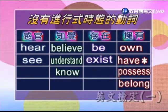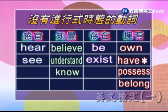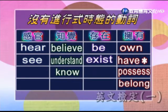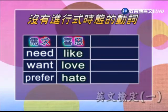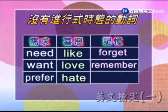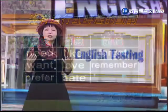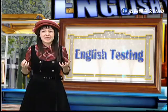感官動詞 hear、see，知覺動詞 believe、understand、know，擁有 have（當擁有時）、possess、belong，需求 need、want、prefer，喜好 like、love、hate，以及記憶 remember、forget，這些都不能有現在進行式。所以今天的 Beat English 解答是 I am just looking，不能說 I am just seeing。